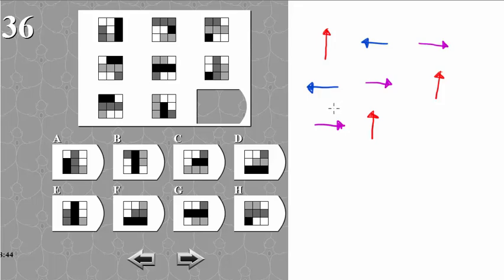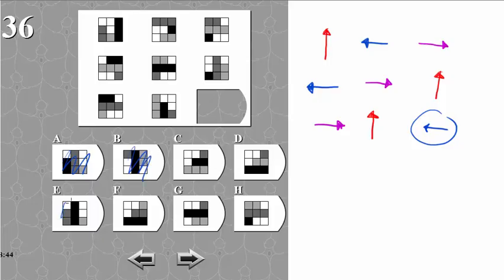It doesn't take a lot of imagination to figure out that this one down here has to point left. So that rules out a lot of these. We can rule out this one, this one. This one points left, this one points left. This one can be ruled out, left, left. And this one can be ruled out. Okay, so far so well.